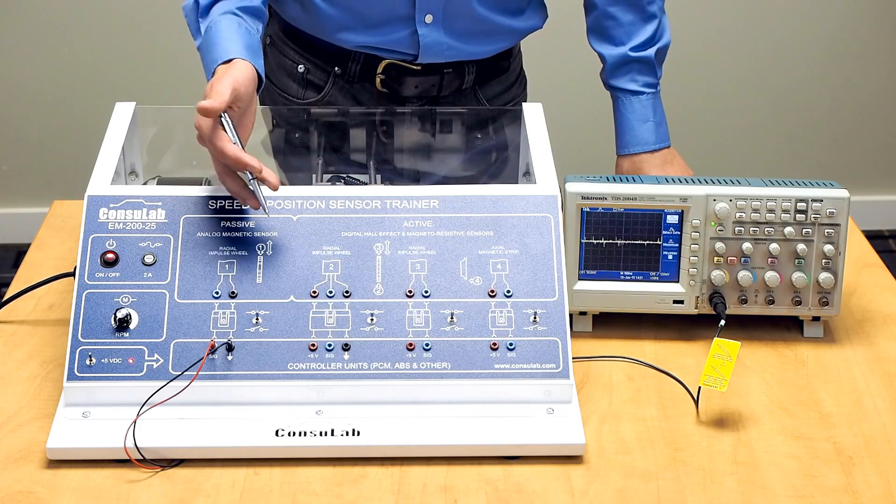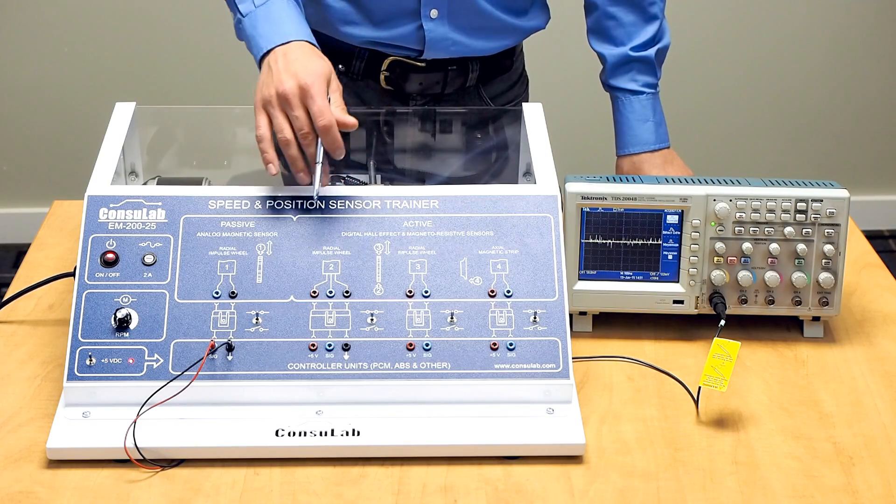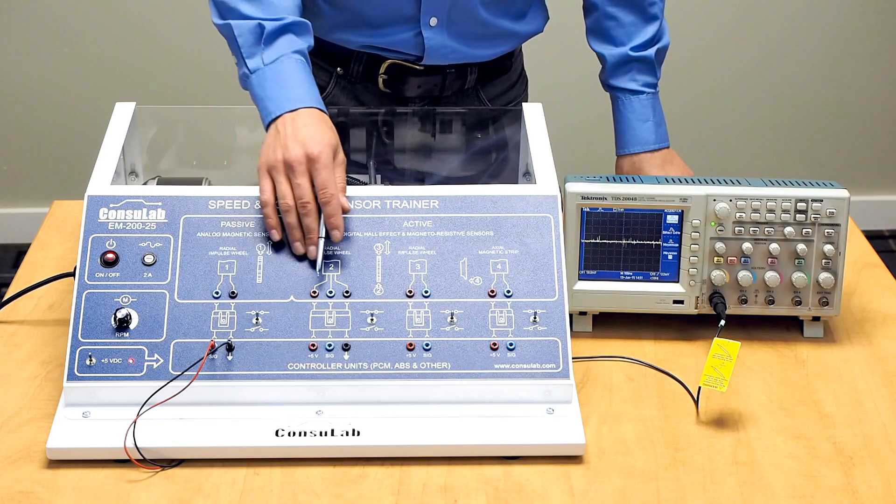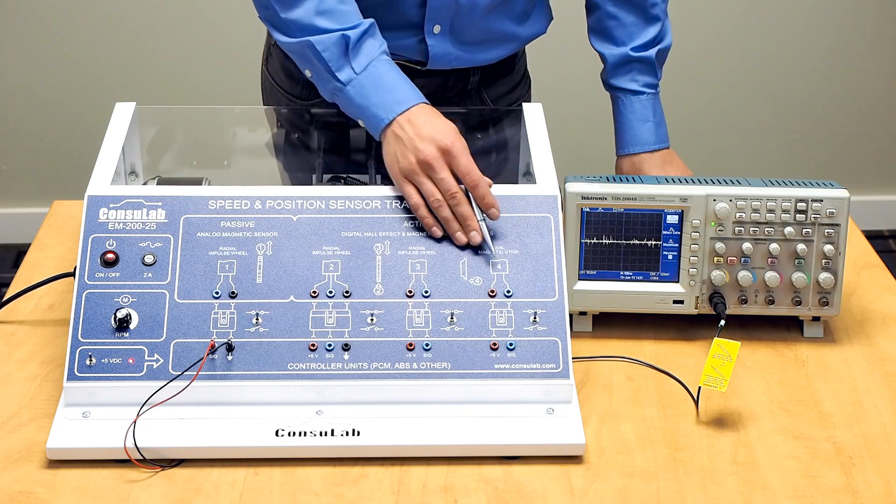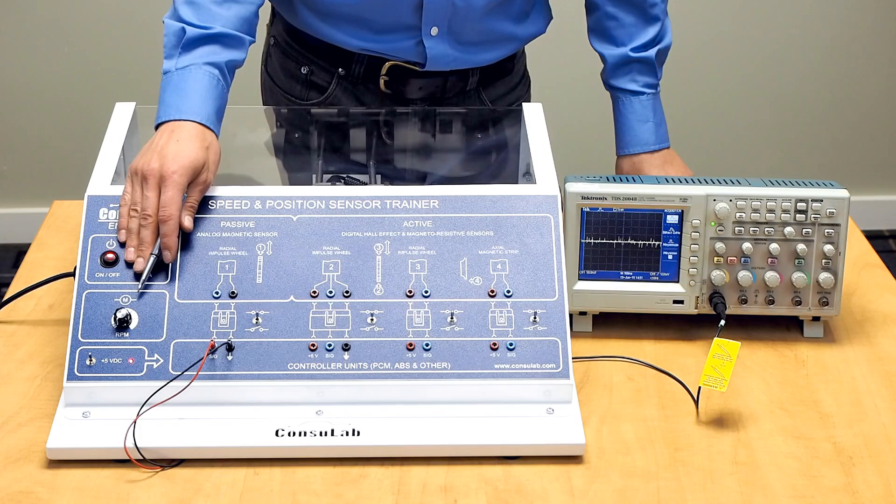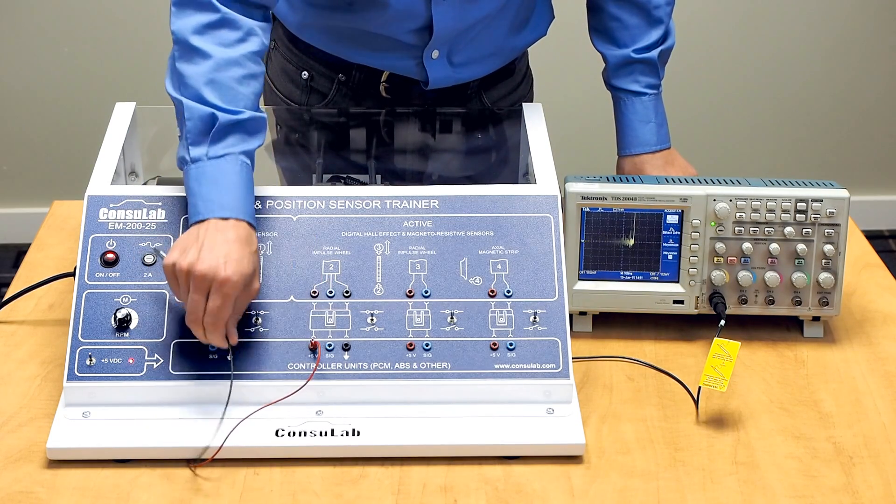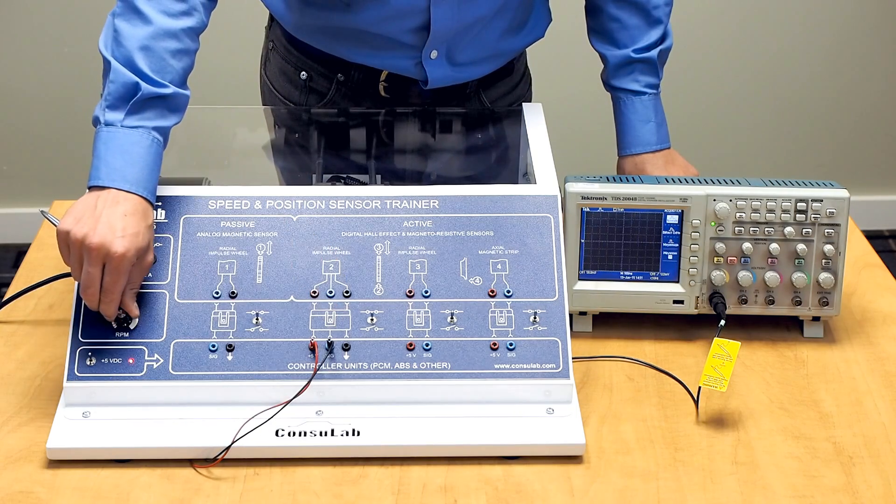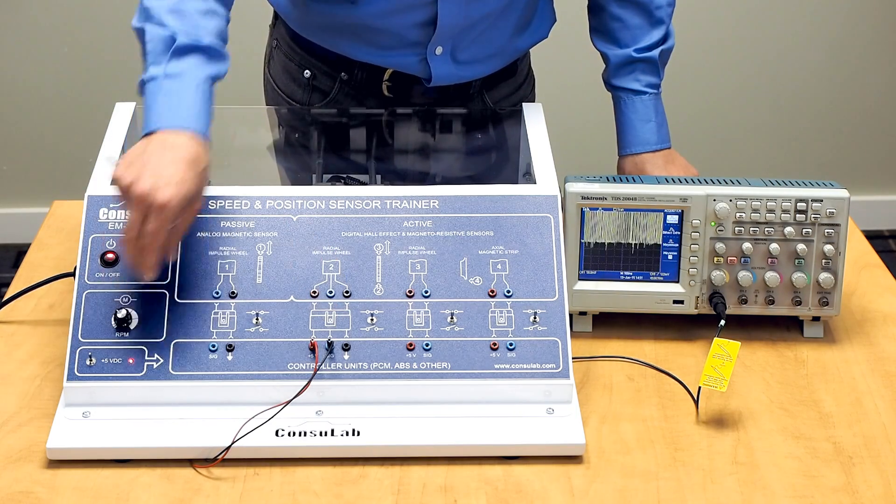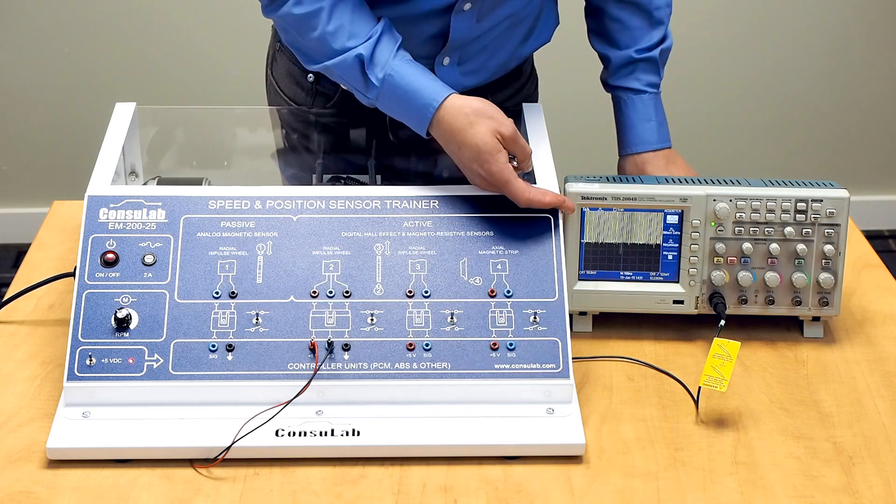Now this product works great for teaching oscilloscopes in a classroom environment. We have individual test points for each of the four sensors, and we have motor speed control here. So what we can do is, using the different test points, we can hook up to different sensors, control the speed of the motor, and watch the results on our oscilloscope.